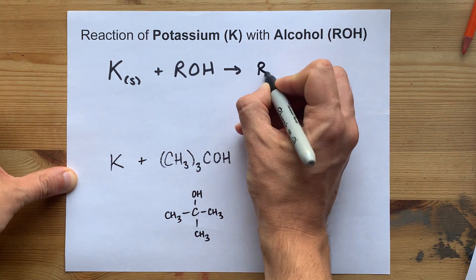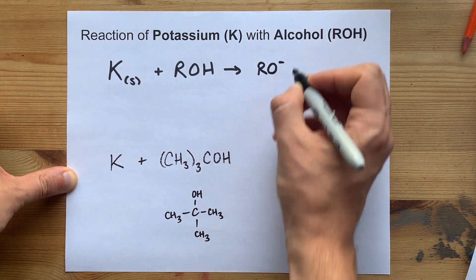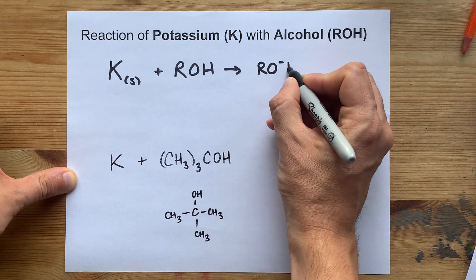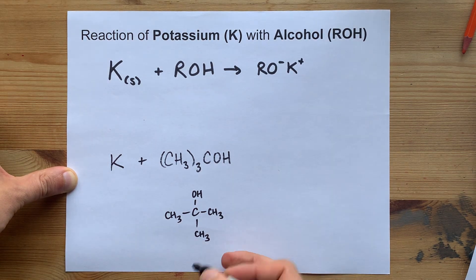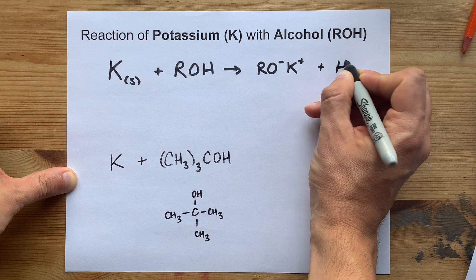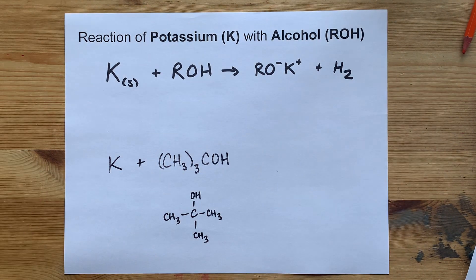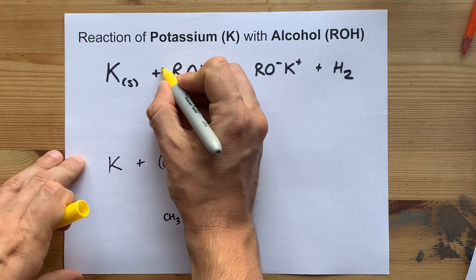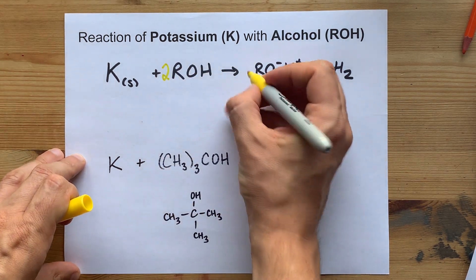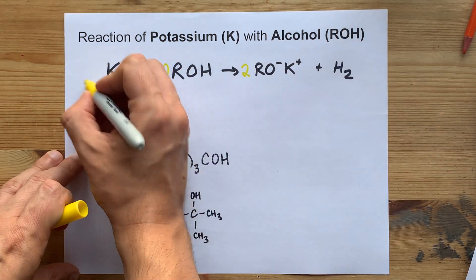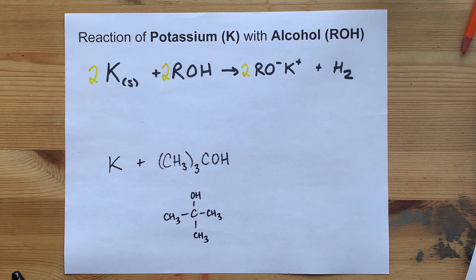You end up with RO as a minus ion, K plus as the counter ion, and you'll end up with hydrogen gas being evolved as well. That means you need to balance this by balancing your H's. You now have two alcohol molecules and two K's as well.